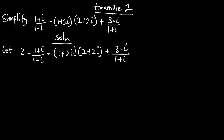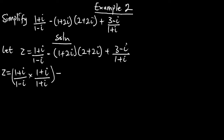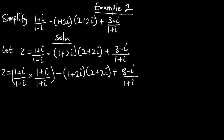Our z is equal to everything here. Looking at the first part, as in Example 1, we multiply by the conjugate: 1 plus i on 1 minus i, multiplying by 1 plus i on 1 plus i. For the second part, which is also a division, we multiply by its conjugate: 3 minus i on 1 plus i, multiplying by 1 minus i on 1 minus i.